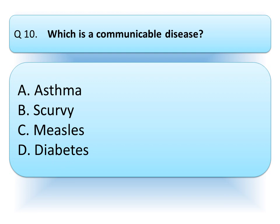Which is our communicable disease? Option A, Asthma; option B, Scurvy; option C, Measles; or option D, Diabetes. Think about the correct answer and drop your answer in the comment box.